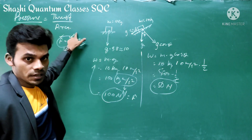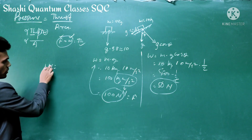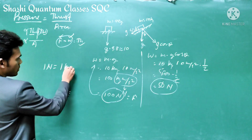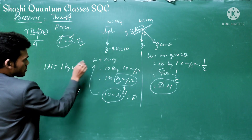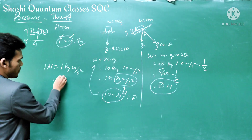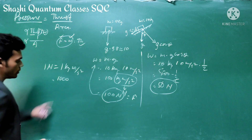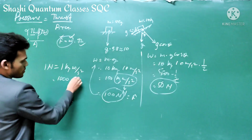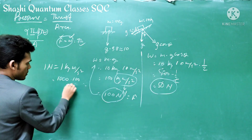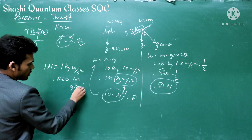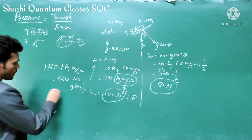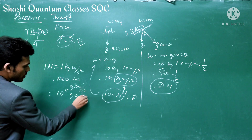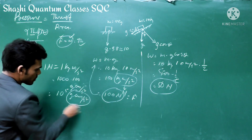Pressure equals thrust divided by area. In SI units, 1 Newton equals 1 kg·m/s². When converted to CGS units, using 1 m = 100 cm, this becomes gram·cm/s², which is the unit called dyne. So 1 Newton equals 10⁵ dyne.